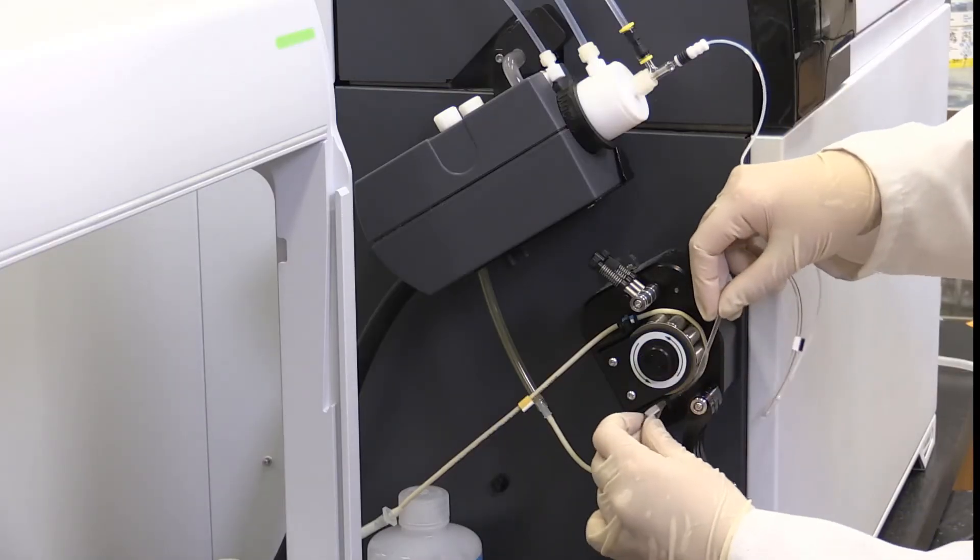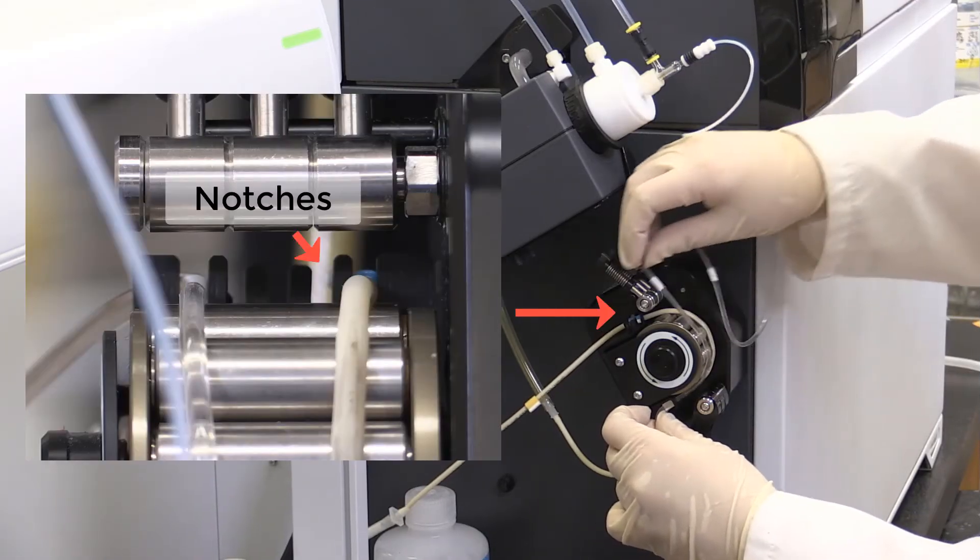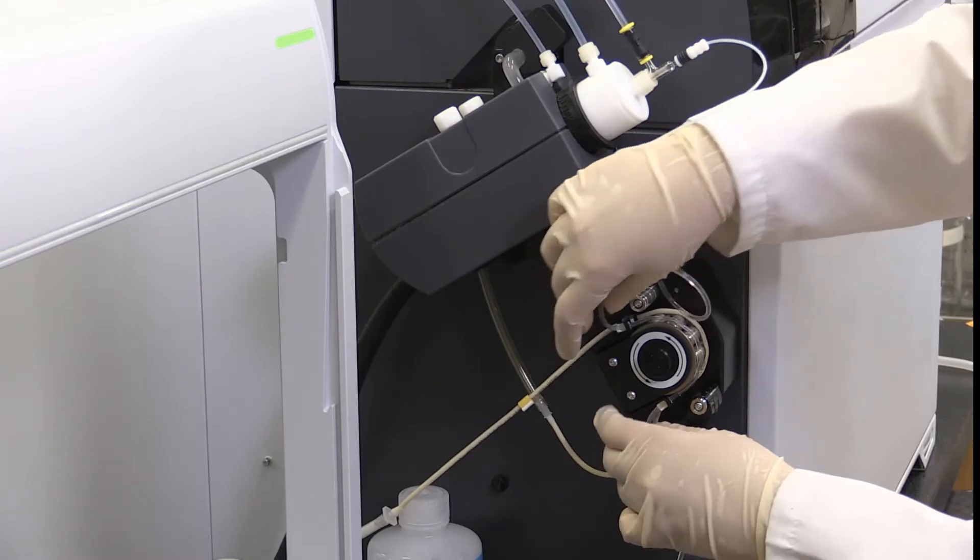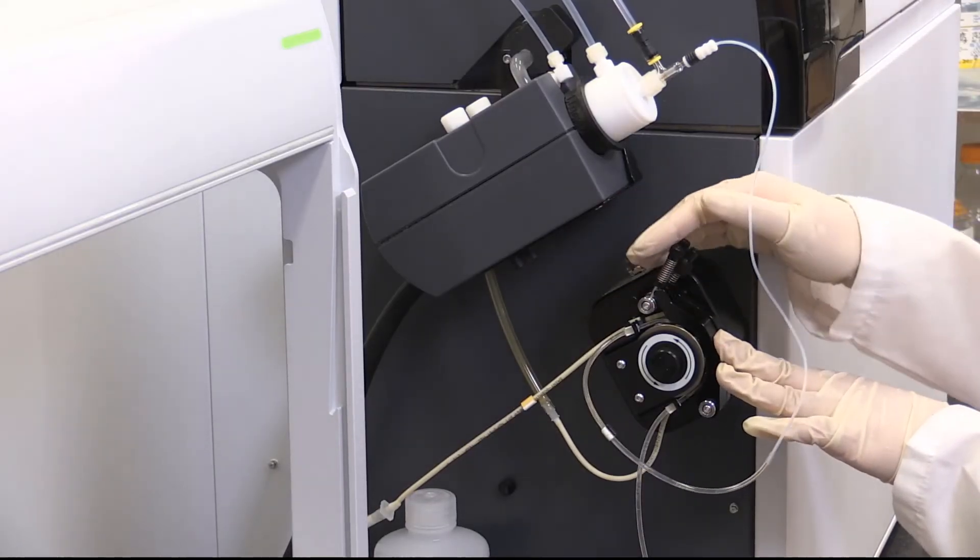When placing the tubing on the peristaltic pump, tubing is placed in the notches and plastic stops are used to keep the tubing snug. Tubing will be clamped to maintain pressure and position.